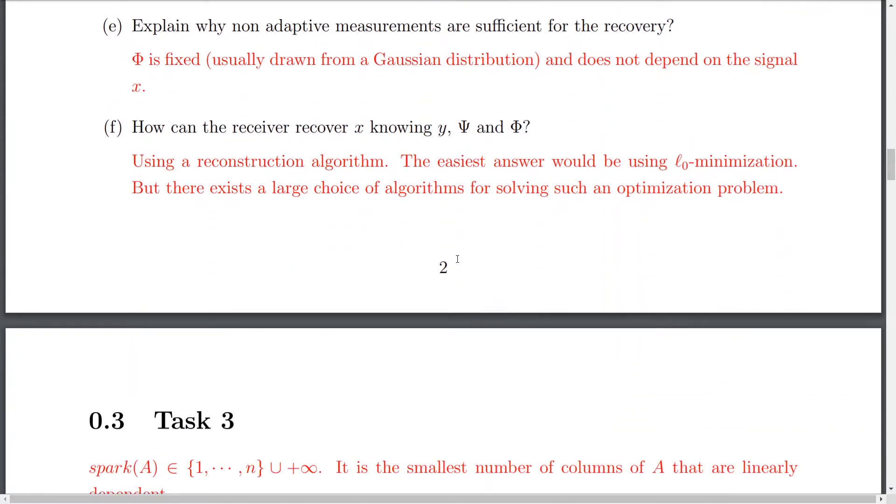Okay. So, how can the receiver recover X, knowing that we have, like here, the unknown is X. And the known elements or parameters that we have are Y, Psi, and Phi. Of course, here, we have an optimization problem that, of course, simply we can reconstruct it using one of the compressed sensing reconstruction algorithms. And the easiest way to answer this question would be to use the L0 minimization that we see. We need to minimize the L0 norm of X subject to Y equals Phi X. But, of course, there exists a large set of algorithms for solving such an optimization problem, like greedy algorithms and so on.